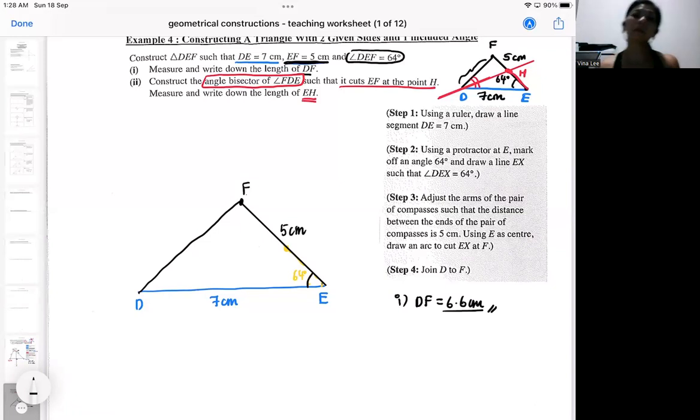Where can the inaccuracy come from? Maybe you measure your 64 degree as a 63 degree. Or your 7cm is actually not very 7cm. So even if you're off by a little bit by 0.1, everything will add on.